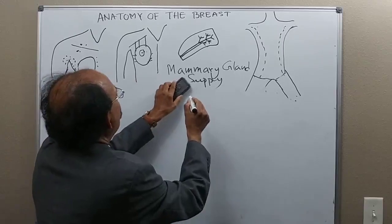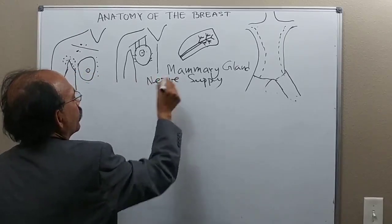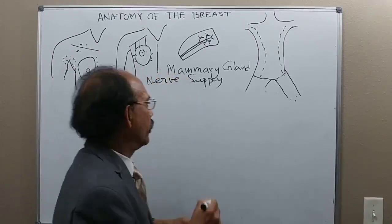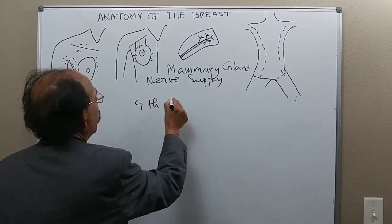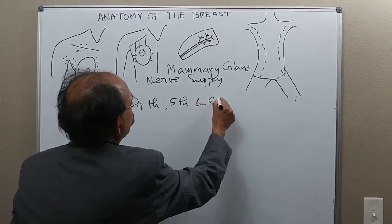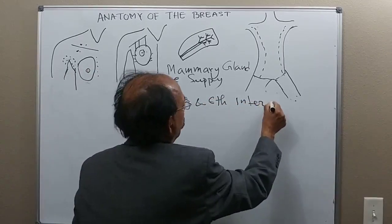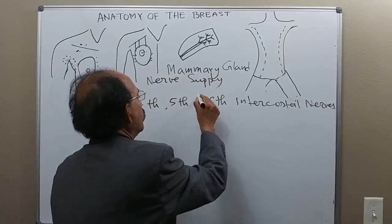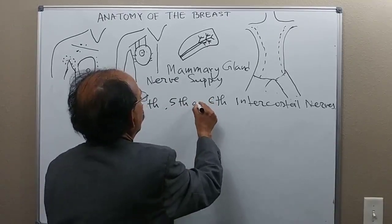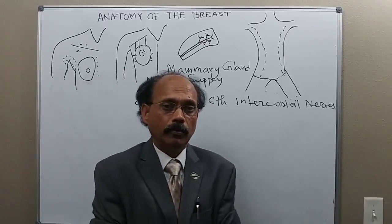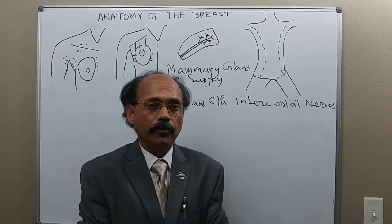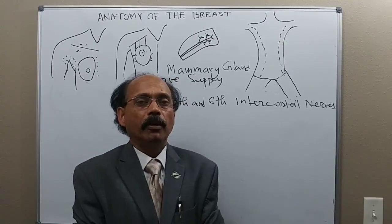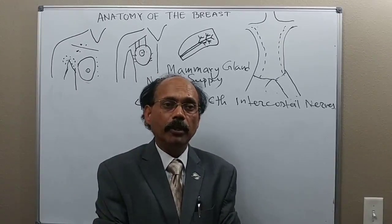The nerve supply of the mammary gland is from the fourth, fifth, and sixth intercostal nerves. These nerves contain sensory fibers and also post-ganglionic sympathetic fibers to the gland and smooth muscles. The sympathetic fibers reach the intercostal nerves through the rami communicantes.